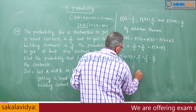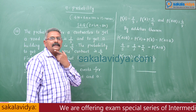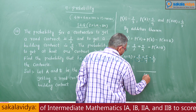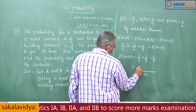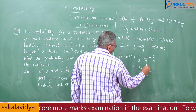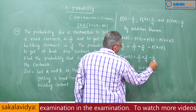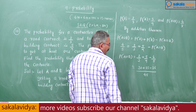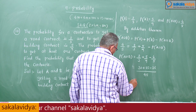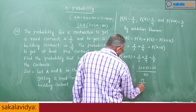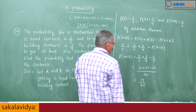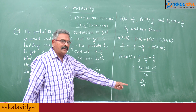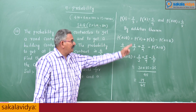The LCM of 3, 9, and 5 is 45. So P of A intersection B equals 30 by 45 plus 25 by 45 minus 36 by 45, which gives 55 minus 36 over 45, equals 19 by 45. This is the required probability. The probability that he gets both the contracts is 19 by 45.